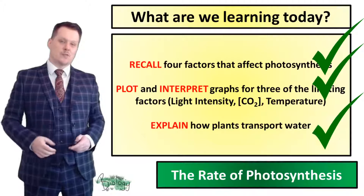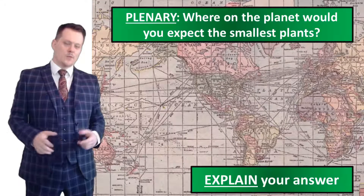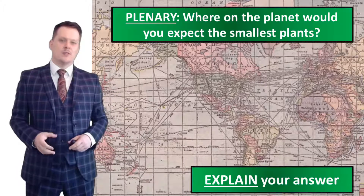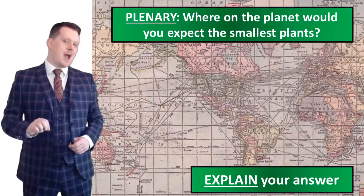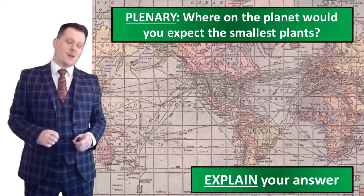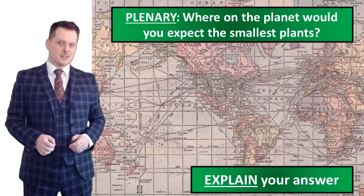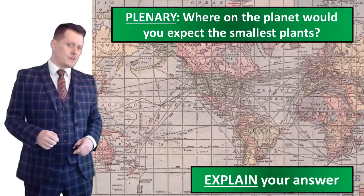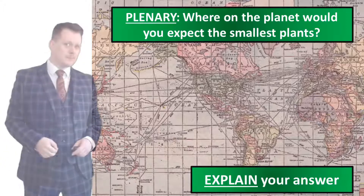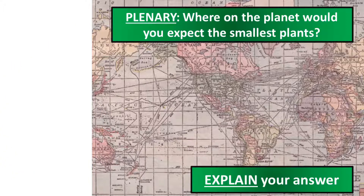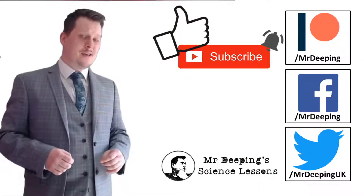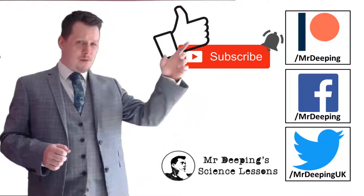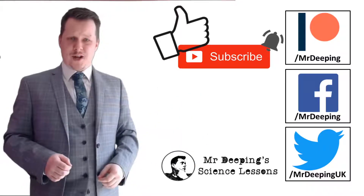Now we can explain how plants transport water through the xylem. Our plenary today is to suggest where on the planet you would expect to find the smallest plants, and explain your answer in terms of the limiting factors of photosynthesis. If you've got any really good answers, put them in the comments below. That covers everything for today's photosynthesis lesson — thanks for watching, don't forget to press the like button, subscribe, press the bell icon, and you can also support me on Patreon and follow me on Facebook and Twitter.